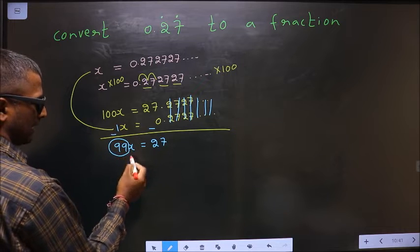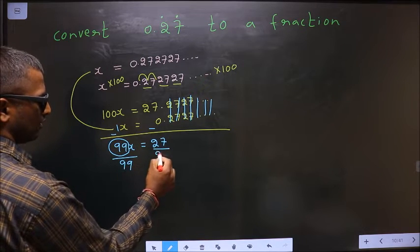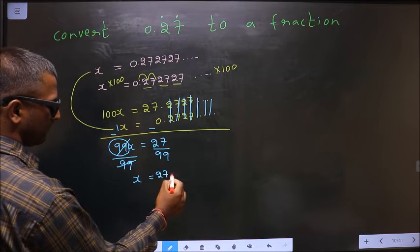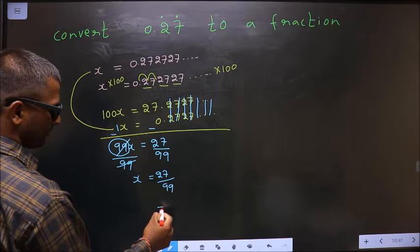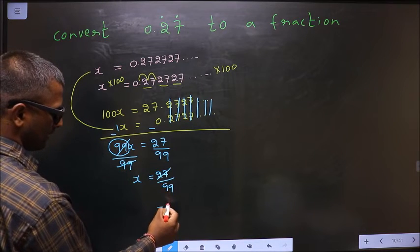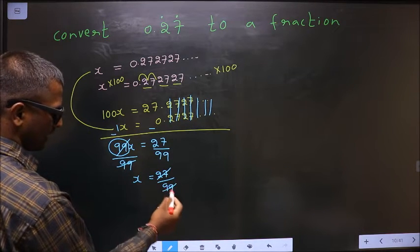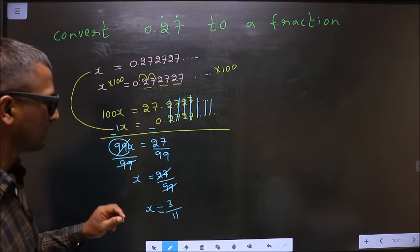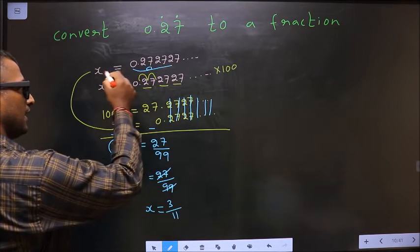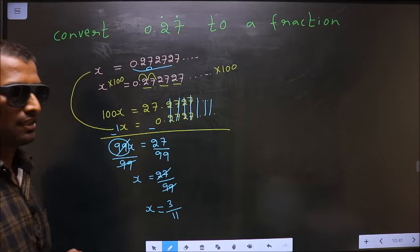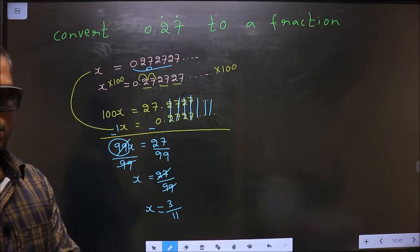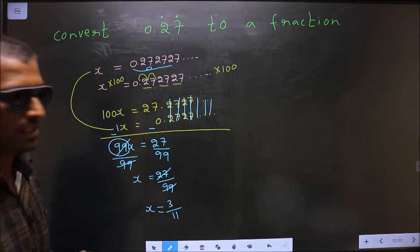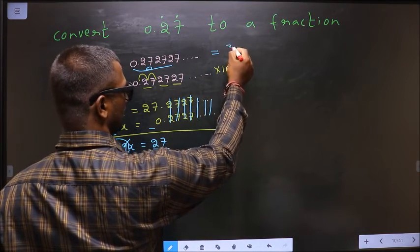To get x, divide both sides by 99 — the 99s cancel out, giving x equals 27 over 99. Simplifying by dividing by 9: 9 goes into 27 three times, and 9 goes into 99 eleven times. So we get 3 over 11. We assumed this decimal to be x, and we got x equals 3 by 11.